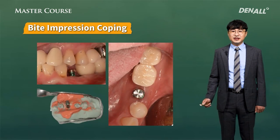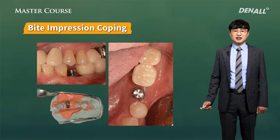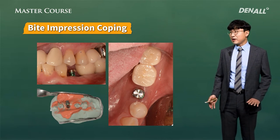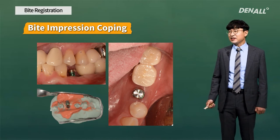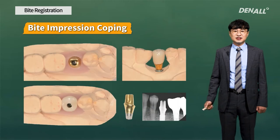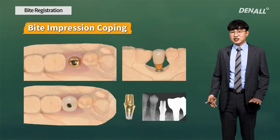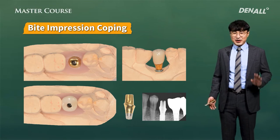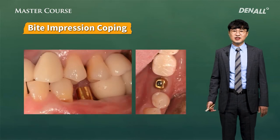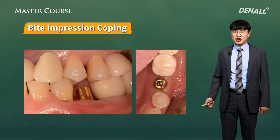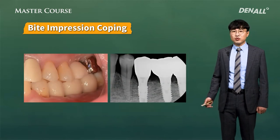Next are bite impression coping cases, where you can take the bite impression and the impression at the same time. Given that the bite and impression are taken simultaneously, it shortens all the procedures and you can also save on bite material. The 3D position of the cast is delivered to the mouth, and the final prosthesis is complete.